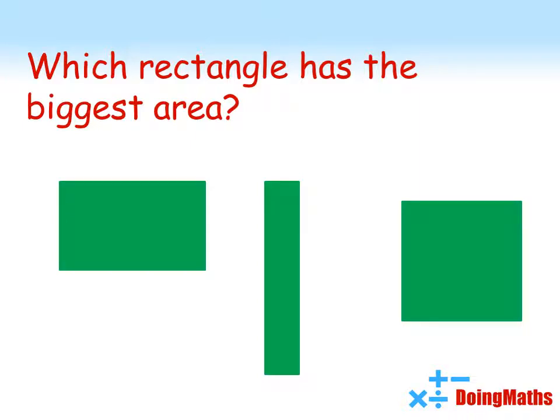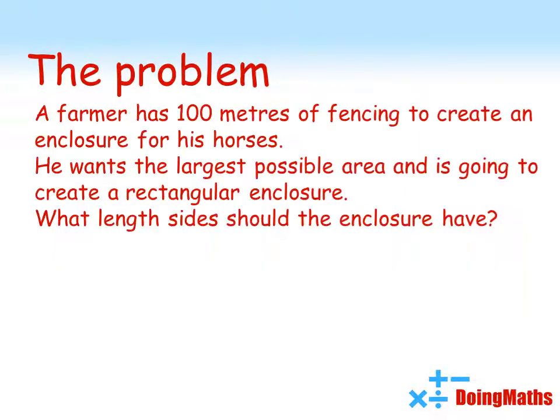Which rectangle has the biggest area? A farmer has 100 metres of fencing to create an enclosure for his horses. He wants the largest possible area and is going to create a rectangular enclosure. What length sides should the enclosure have?